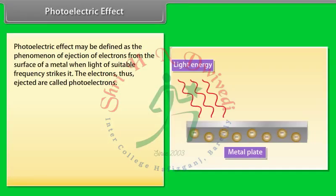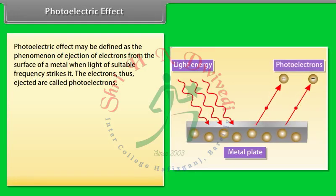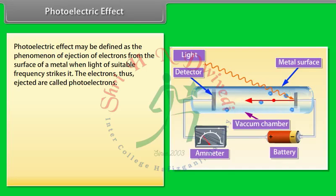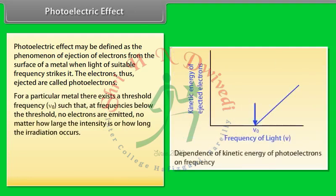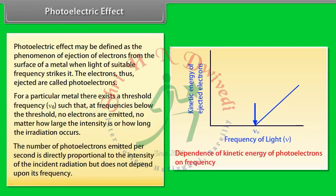Photoelectric effect: The photoelectric effect may be defined as the phenomenon of ejection of electrons from the surface of a metal when light of suitable frequency strikes it. The electrons ejected are called photoelectrons. For a particular metal, there exists a threshold frequency V₀ such that at frequencies below the threshold, no electrons are emitted regardless of the intensity or duration of radiation. The number of photoelectrons emitted per second is directly proportional to the intensity of the incident radiation but does not depend on its frequency.